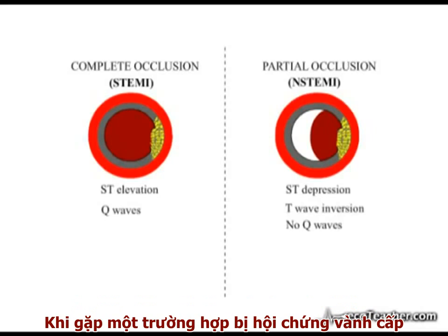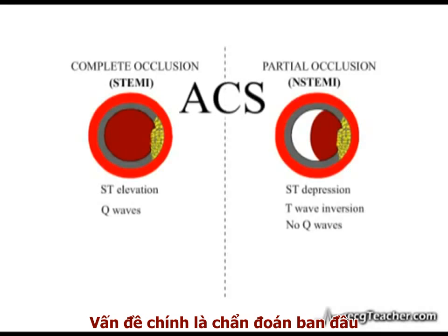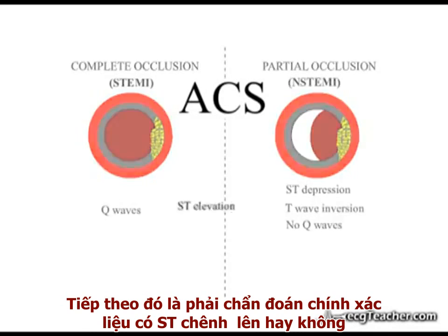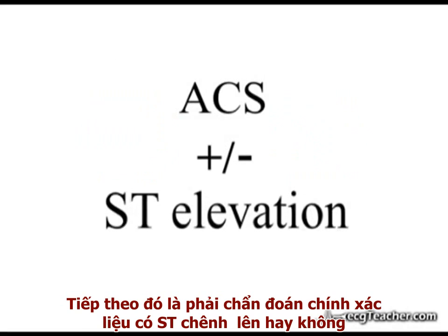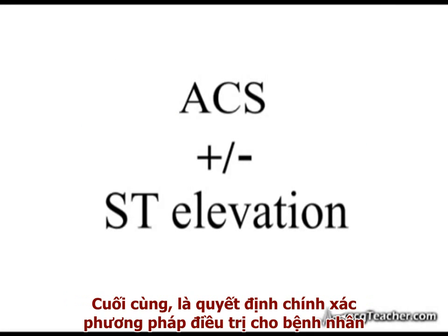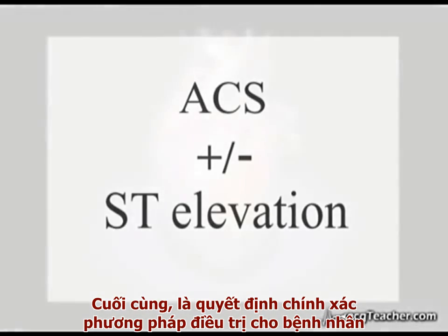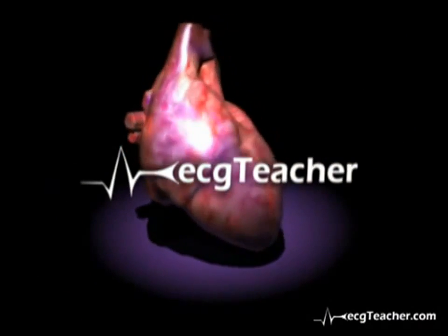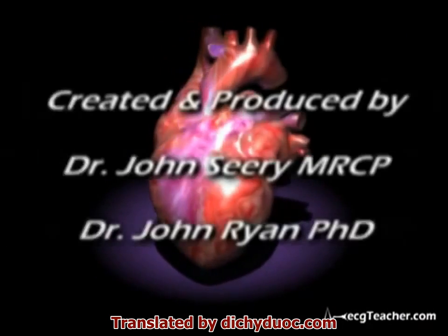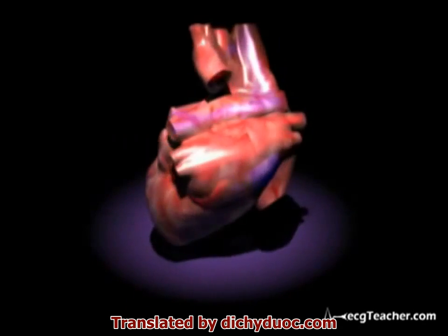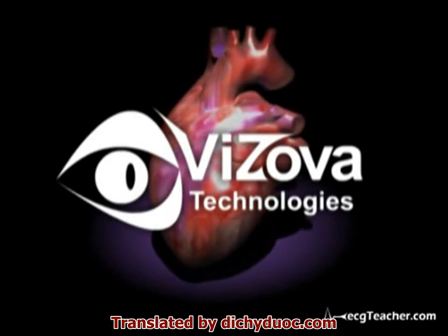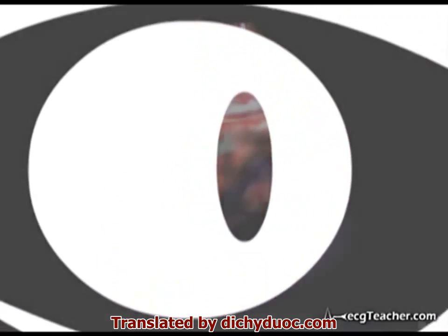At the present time, when dealing with suspected acute coronary syndrome, the key is the initial diagnosis, followed by accurate identification of the presence or otherwise of significant ST elevation — the latter being the prime determinant of the appropriate treatment pathway.